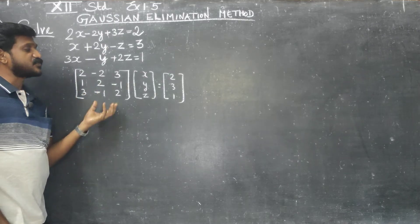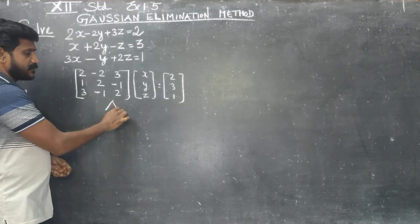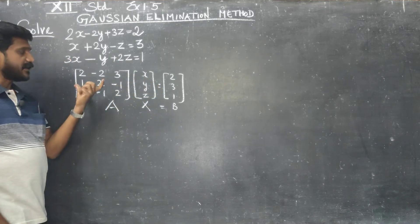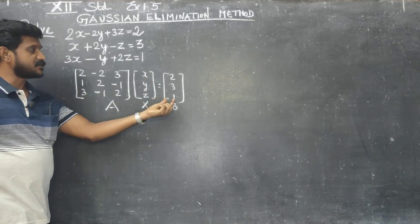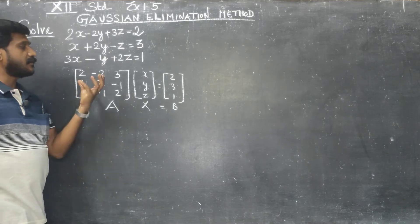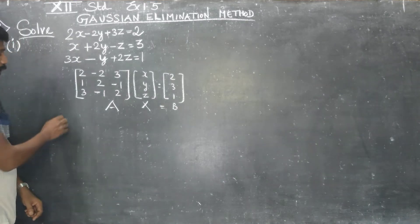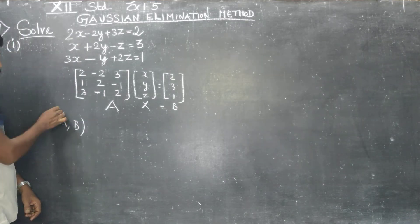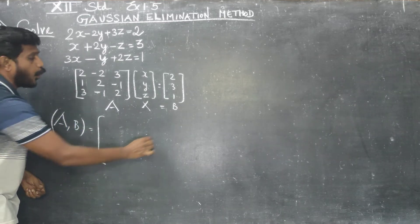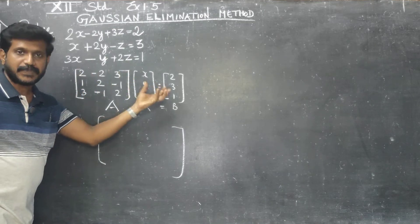After transforming this into matrix form, we name the parts: this is my A matrix, this is my x, and this is my B matrix. I have to form the augmented matrix. I am going to write a matrix called A|B — that is, the A matrix augmented with B.